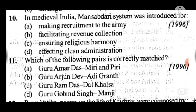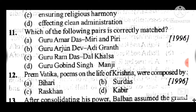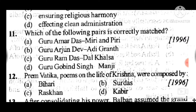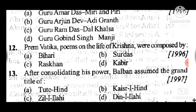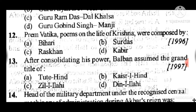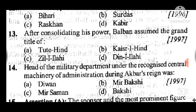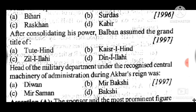Question 11: Which of the following pairs is correctly matched? Answer to question 11 is B: Guru Arjan Dev – Adigranth. Question 12: Prem Vatika, a poem on the life of Krishna, was composed by — answer to question 12 is C: Raskhan. Question 13: After consolidating his power, Balban assumed the grand title of — answer to question 13 is C: Zill-e-Ilahi.